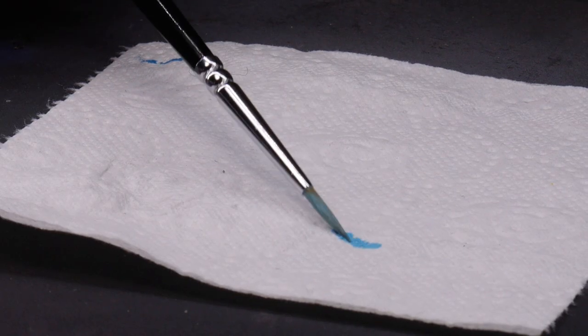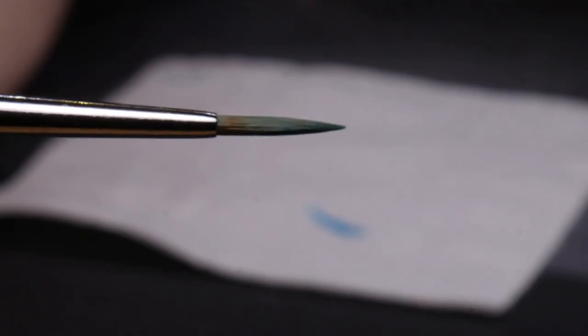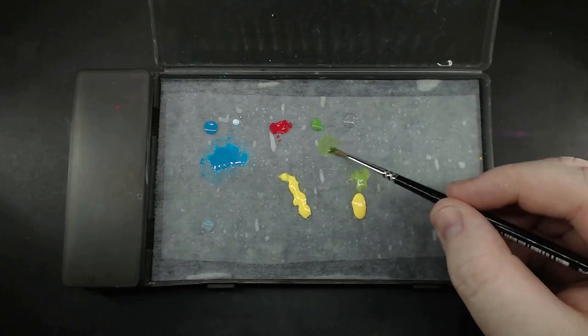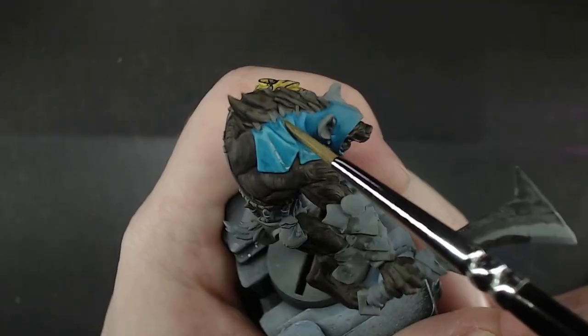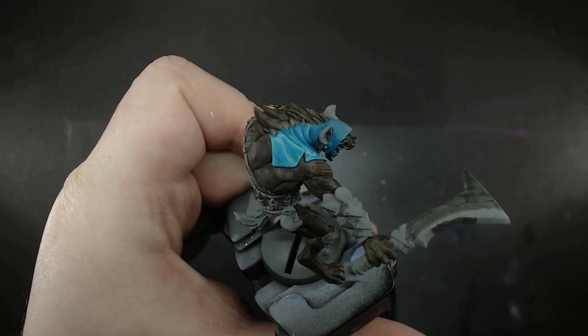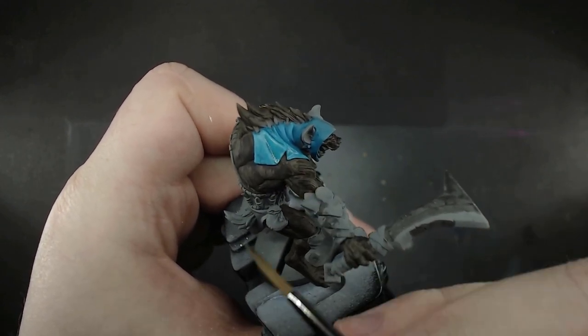By wiping the brush on some paper towel or tissue, it draws out the extra moisture and brings back the brush to a point. It's also really important for glazing, as you want the solution in the brush to be quite thin. Otherwise, it's not a glaze, but a wash. By drawing out the moisture, we can get an even coat of a thin or diluted paint on a flat surface.